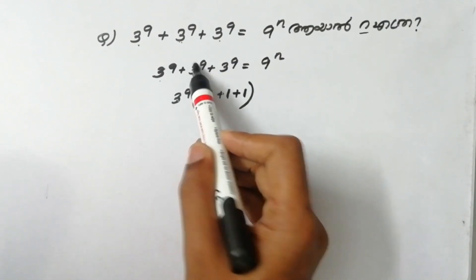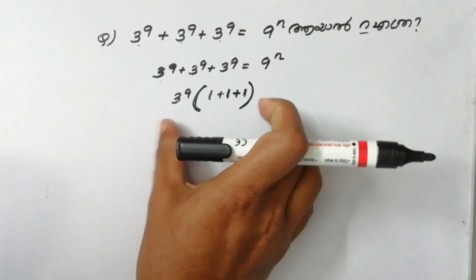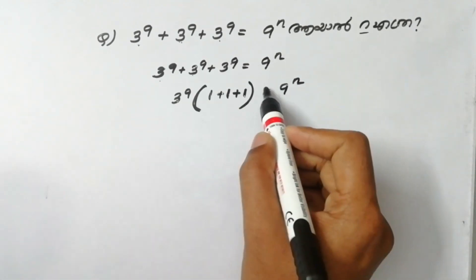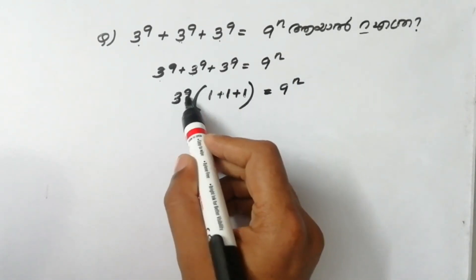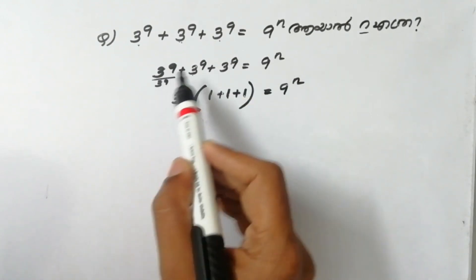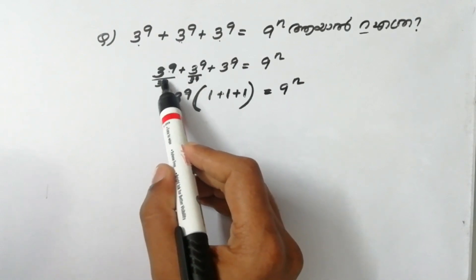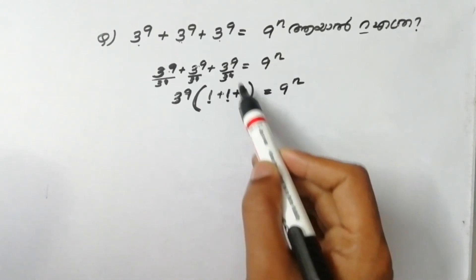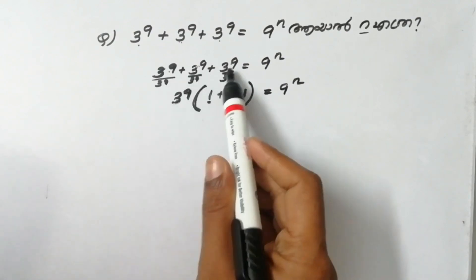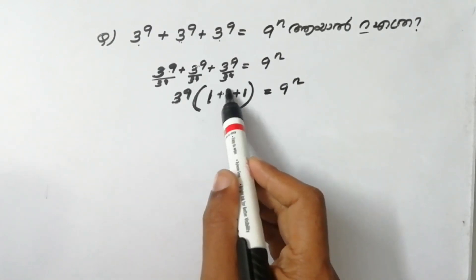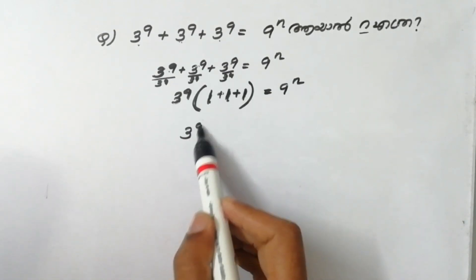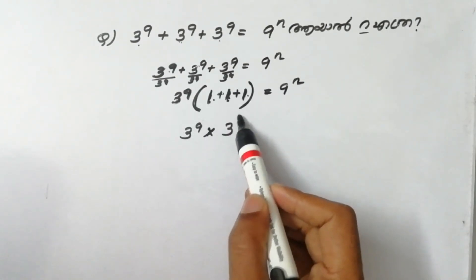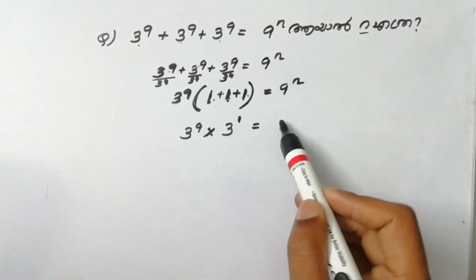This one is 3 raised to 9 into 1, and you can put this one in. This one is very direct. Let's go ahead and see: the mark e is equal to 9 raised to n. This one gives us 3 raised to 9, so we will divide this one. 3 raised to 9 divided gives us 1. That means 3 raised to 9 and 3 raised to 9 — this is 1. If you have 3 raised to 9, you can divide the number. So 1 plus 1 plus 1, which gives 3 raised to 9. If you can see this answer: 3 raised to 9 times 3 is equal to 9 raised to n.